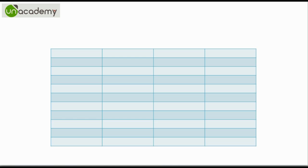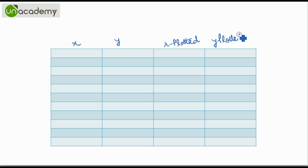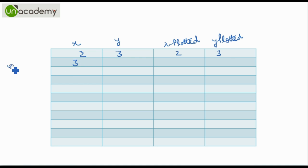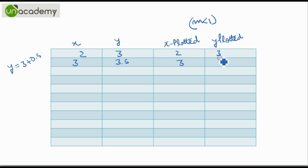So now let us begin. Let me label these columns: X and Y plotted. Initially we have the point (2, 3), which will be plotted as is. Then we increment x by 1, so x becomes 3, and the new y is the previous y plus 0.5, that is 3.5. Since slope is less than 1, x is plotted as is and y is rounded — round(3.5) becomes 4.